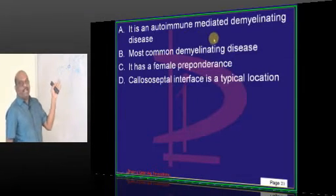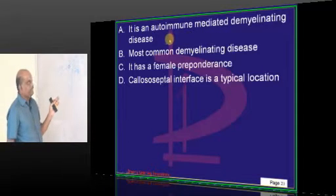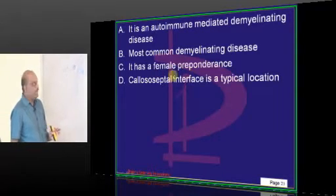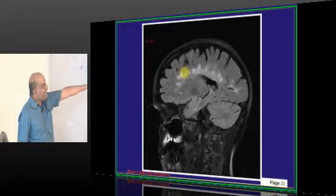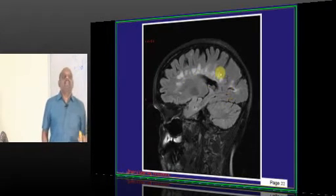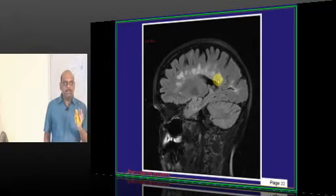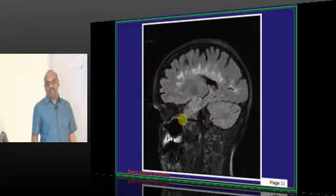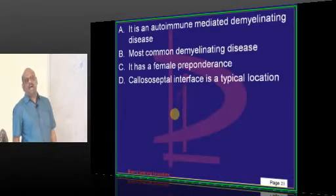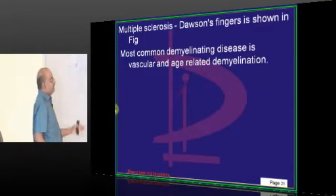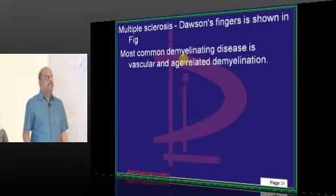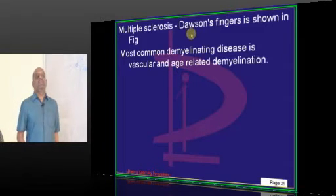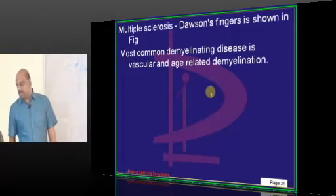It is an autoimmune mediated demyelinating disease, multiple sclerosis. It has female preponderance. It occurs in the callosal-septal interfaces, the typical location. And what are these opacities in the corpus callosum area called? Dawson's Fingers. D-A-W-S-O-N. Dawson's Fingers is the name given for the corpus callosal opacities. Multiple sclerosis is not the most common demyelinating disease. Most common demyelinating disease is often vascular in origin. Age-related demyelination is most common cause, but not multiple sclerosis.